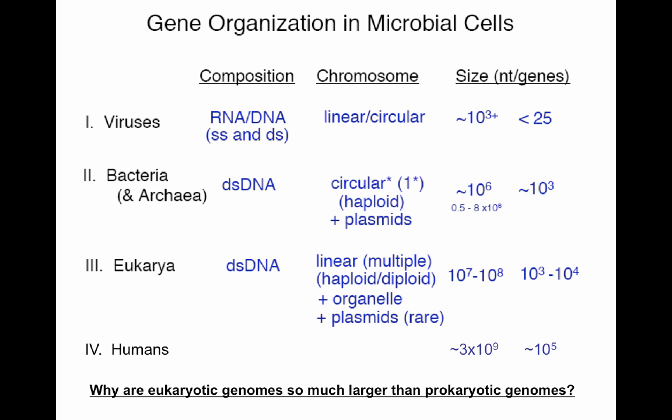Eukaryotes have double-stranded DNA with linear chromosomes, are usually diploid though some are haploid, contain organelles with circular genomes, and plasmids are very rare. Humans have about 3×10⁹ base pairs and contain about 100,000 genes. The question is: why are eukaryotic genomes so much larger than prokaryotic genomes? That is the subject of the next section.